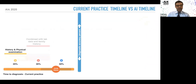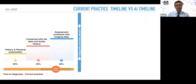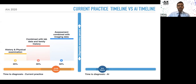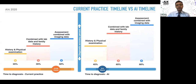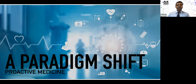Our current practice timeline shows how we assess time-to-diagnosis and accuracy. History, physical, labs, imaging, and combined data increase accuracy up to 50%, but it takes a human 12 to 24 hours — sometimes weeks to months. Applying artificial intelligence to use-case models, we can potentially increase accuracy to upwards of 80% positive predictive value within two to four hours, sometimes even less.